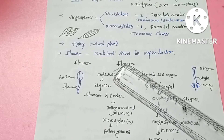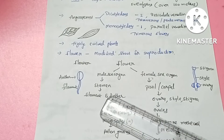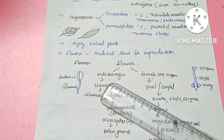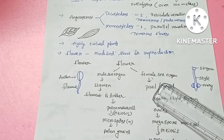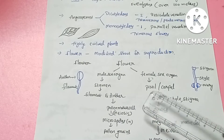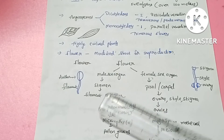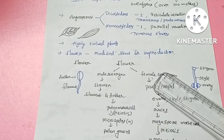In angiosperms, the flower is a modified form of the shoot. The shoot is modified for reproduction. The flower contains the male sex organ and the female sex organ.